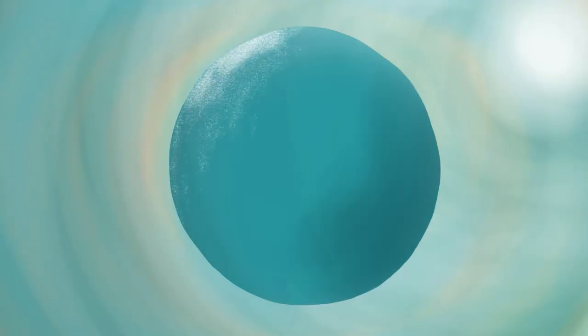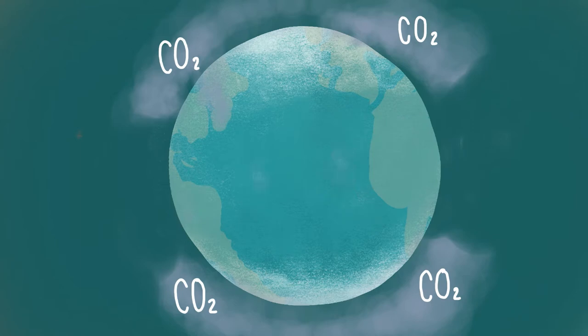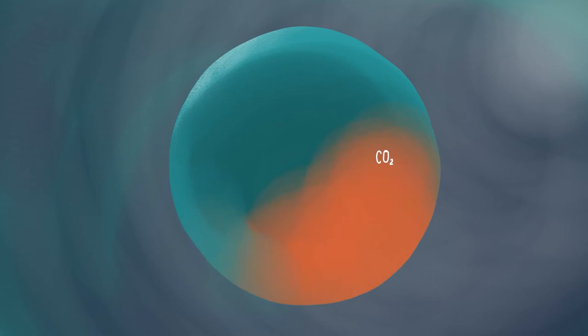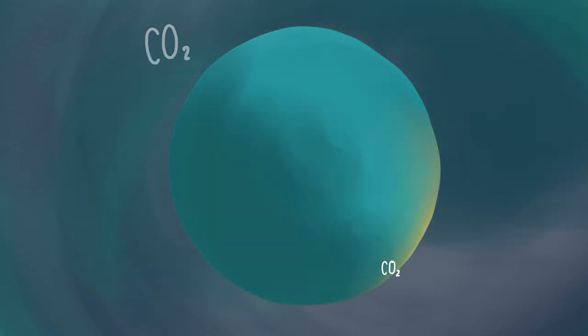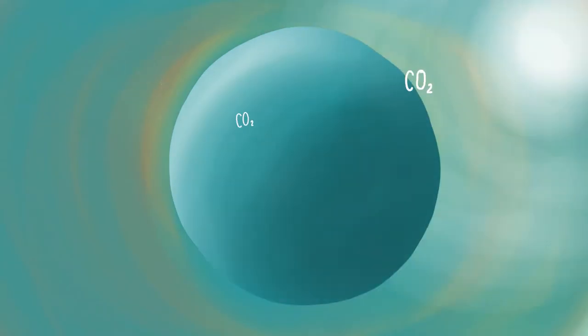The ocean also absorbs about 1 third of the carbon dioxide emitted to the atmosphere, helping to slow down climate change. Carbon dioxide is a naturally occurring greenhouse gas that retains part of the heat the Earth radiates, making life on Earth possible.